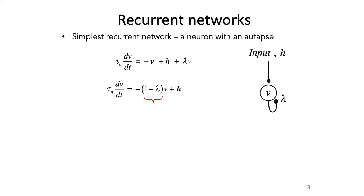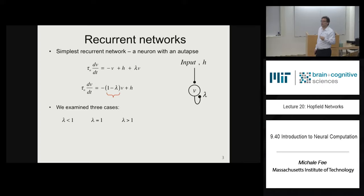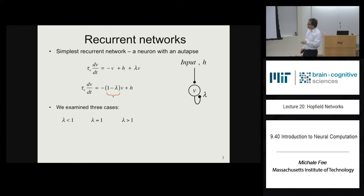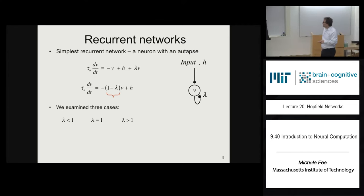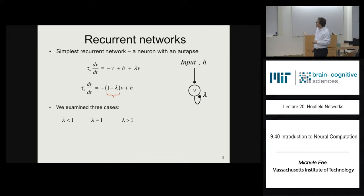With a recurrent connection lambda, there's an additional input proportional to the firing rate of the neuron. We rewrite the equation as tau dv/dt equals minus (1 minus lambda) times v plus the input. The behavior of this simple recurrent network depends strongly on the value of the coefficient (1 minus lambda). We discussed three cases: lambda less than 1, lambda equal to 1, and lambda greater than 1.